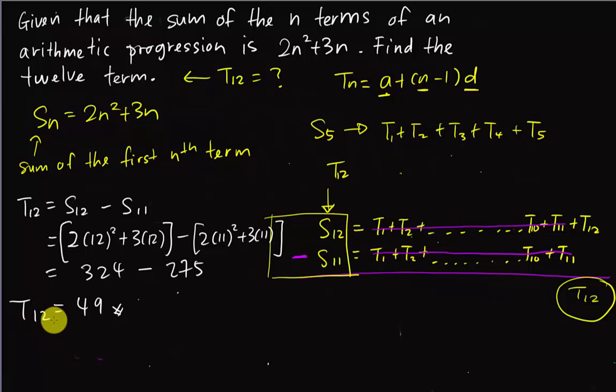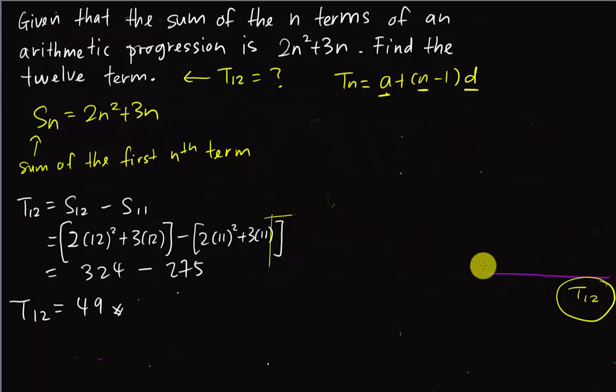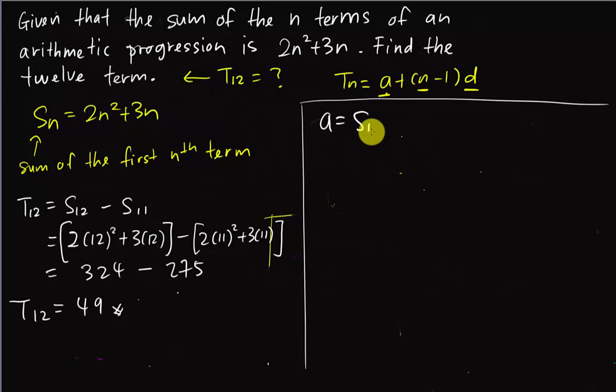However, if you really want to find a and d and then apply the formula, you should be able to get the same answer also. From here, maybe we try something else. Let's say I want to use the formula Tn = a + (n-1)d. In order to find a, I'm going to use S1. Because S1 means sum of the first term, it basically should equal to the first term. So it's 2(1²) + 3(1), which equals 5.